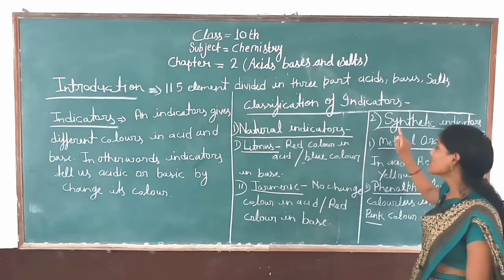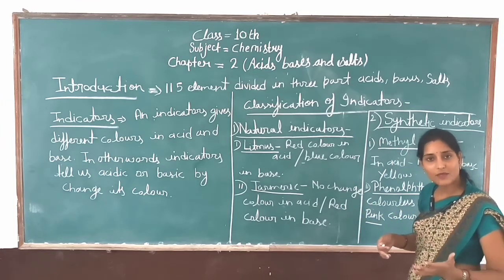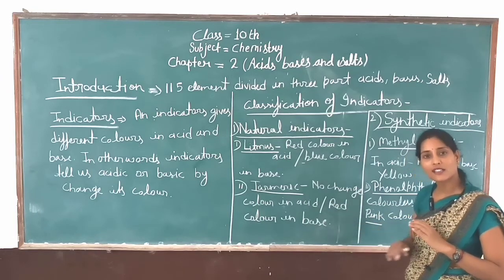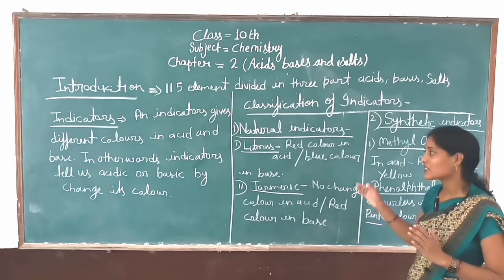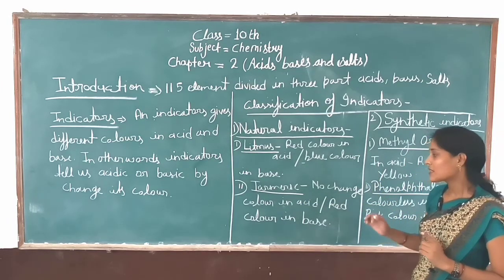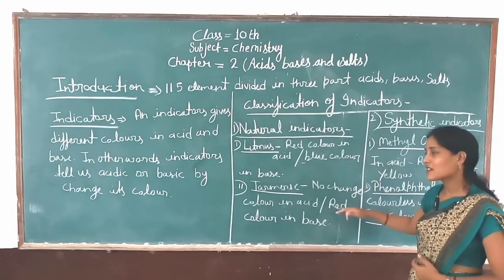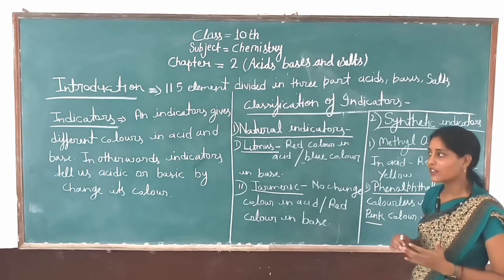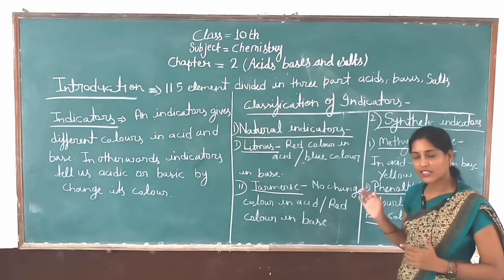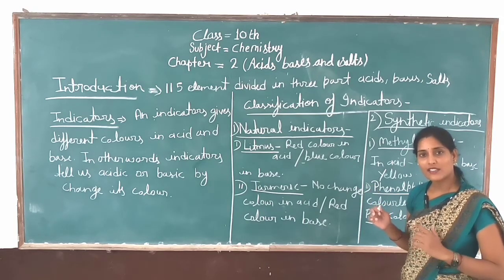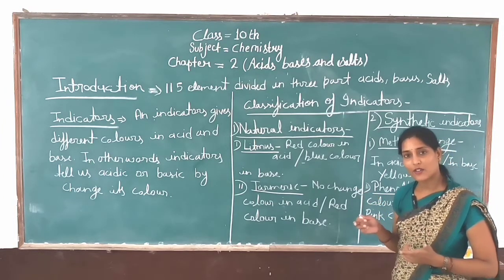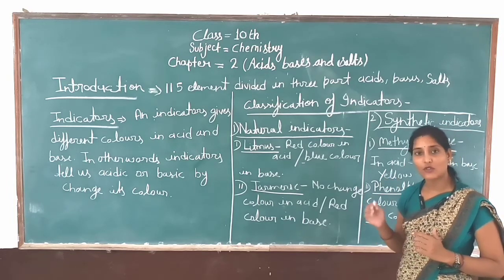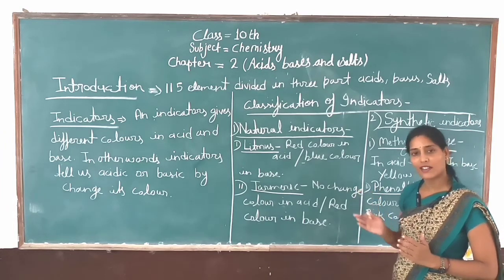So we have now read about two types of indicators — which ones? Natural indicator and synthetic indicator. Natural indicators are those we obtained naturally, which we already see in our everyday life and how they change color. Synthetic indicators also do the same — indicate whether the solution is acidic or basic. We have already studied both of these types in class 7 and 8 as well. Now, the next indicator that comes will be neither a natural nor a synthetic indicator — it will be a different one.